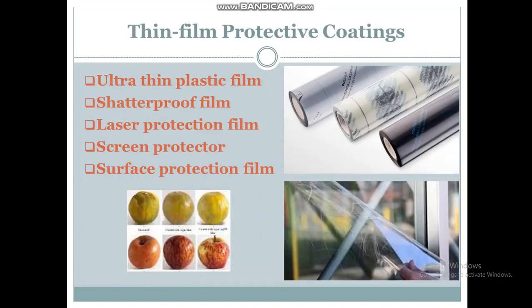Thin film protective coatings. Thin films can be used as protective coatings for different materials, such as ultra-thin plastic films used for wrapping different materials. They can also serve as screen protectors, like mobile screen protectors and other displays such as TV screens. Additionally, there are different types of thin films used for the protection of fruits and vegetables.